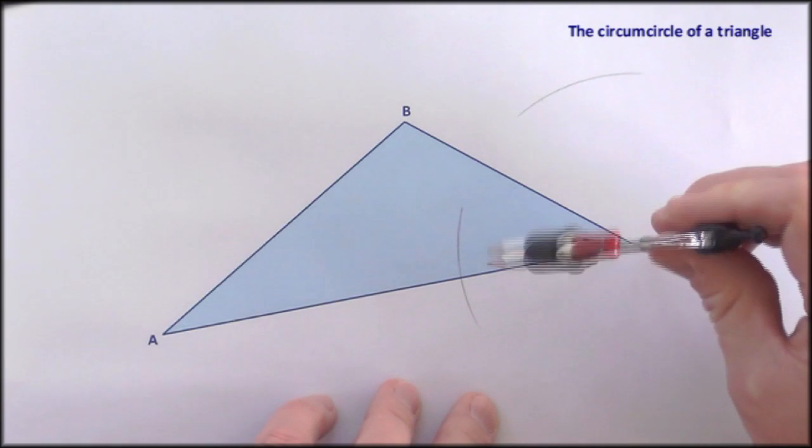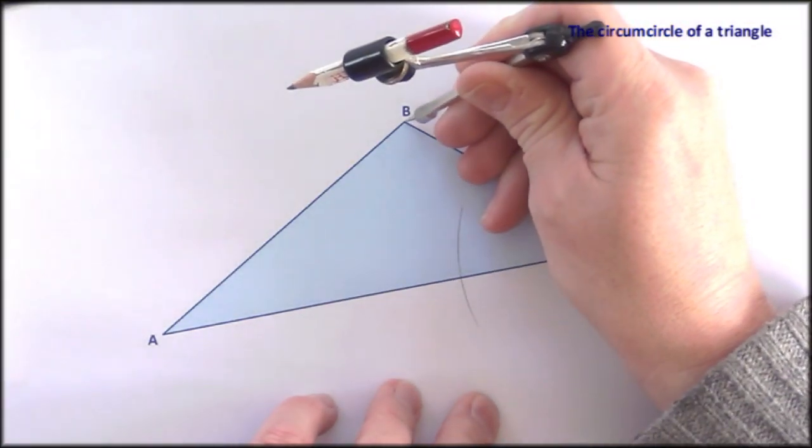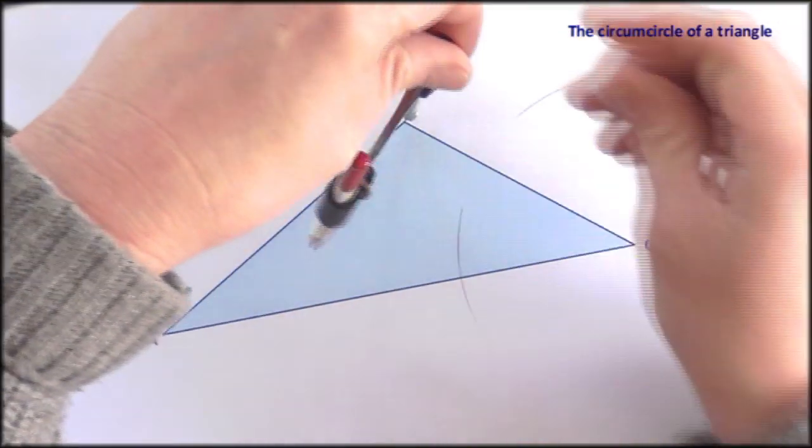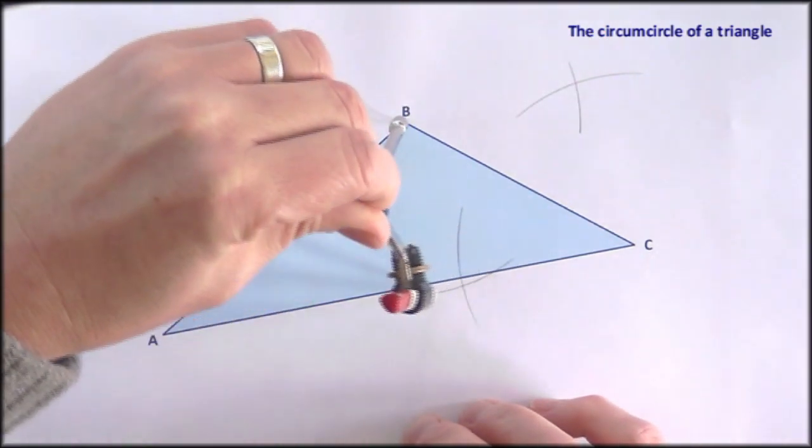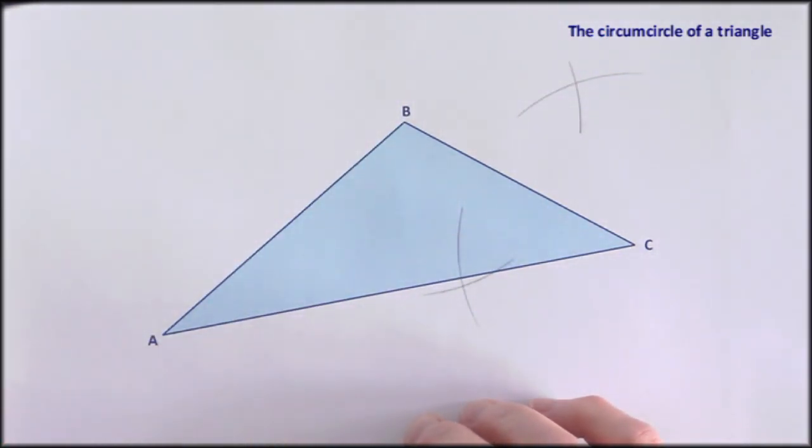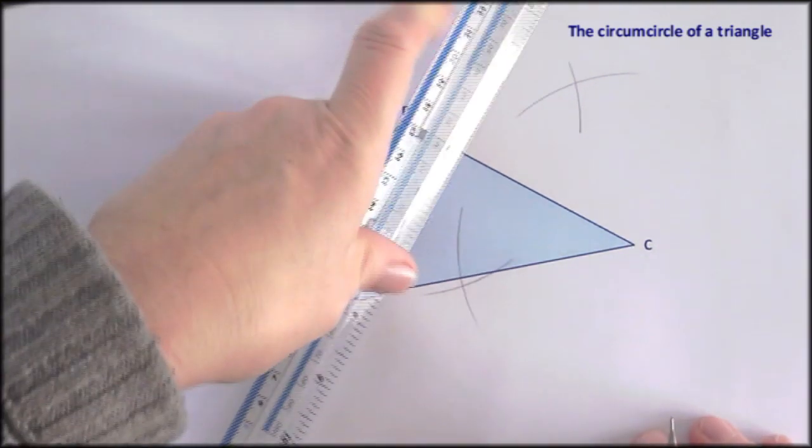Arcs above and below and then go to B, cross those arcs, there we are, and then I'll draw in the perpendicular bisector.